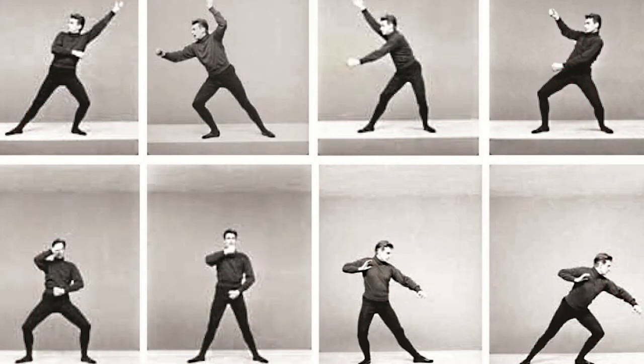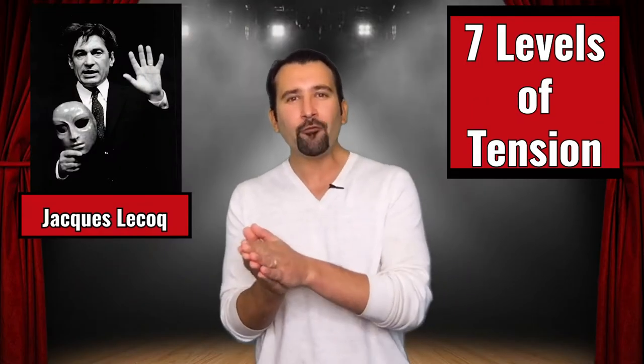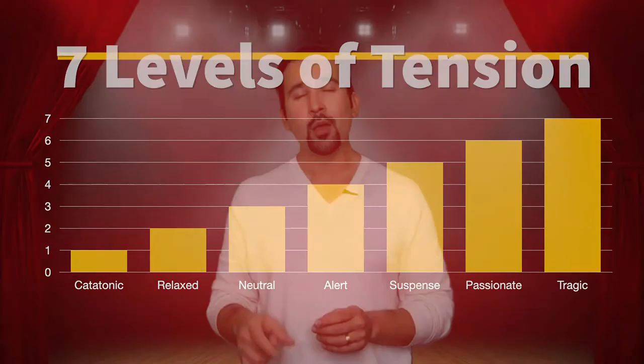Hello everyone and welcome back to movement. This week we are going to explore tension and how adding tension to our body can change the way we experience the world and can also change the way your character experiences a situation. Jacques Lecoq was one of the most famous acting teachers, especially with physical theater and mime work. He created a system of seven different levels of tension that every character will experience within a play. We're going to start with the first and go all the way through, and I want you to join this activity with me.